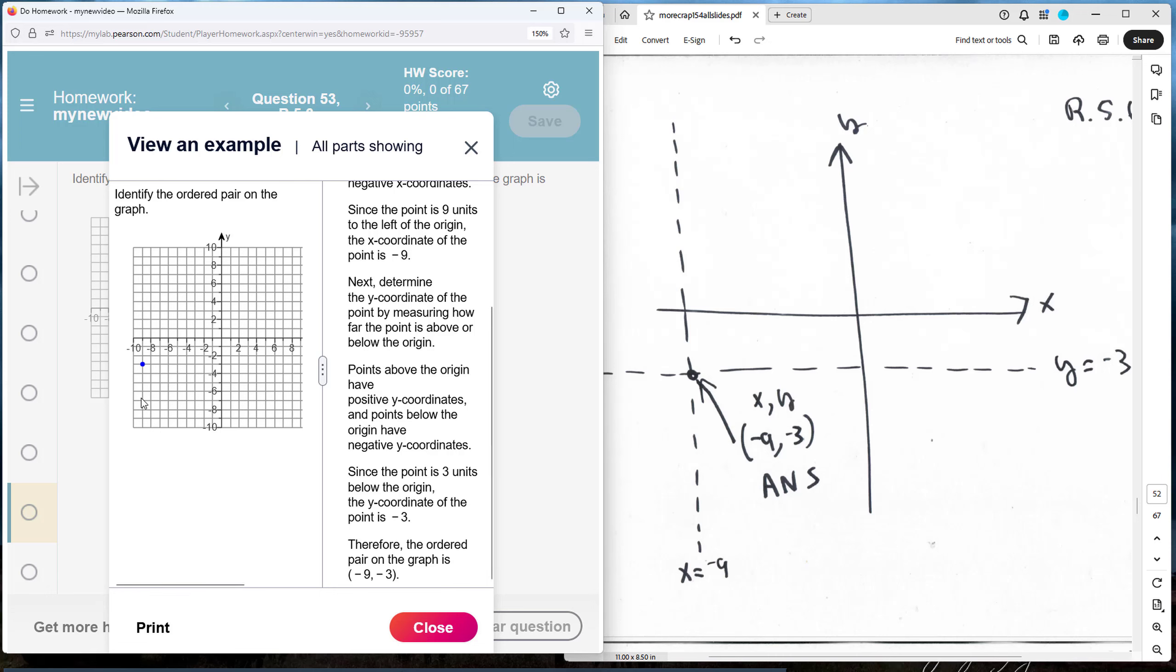So what I did is I drew a vertical line here across where the point is and it happens to be that this particular line represents all the numbers where the x coordinate is a negative 9.